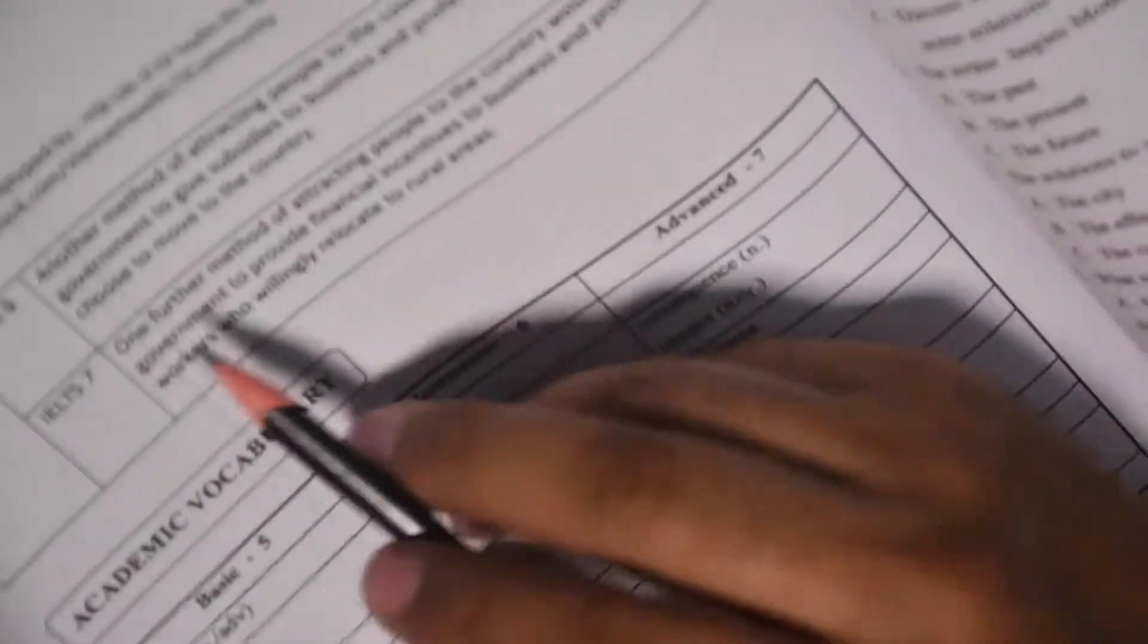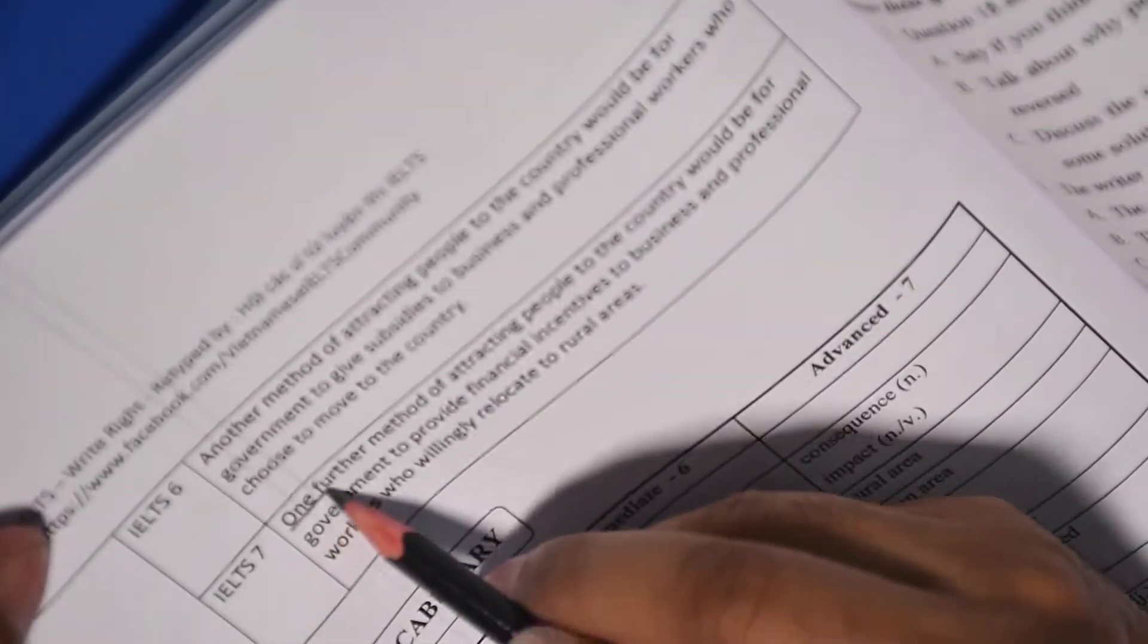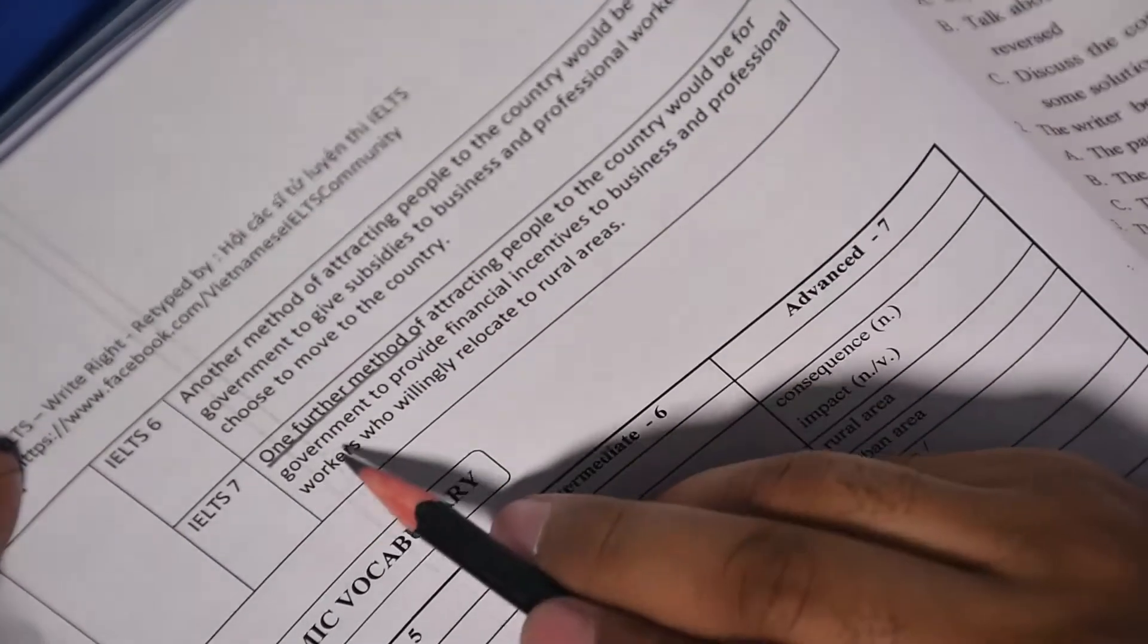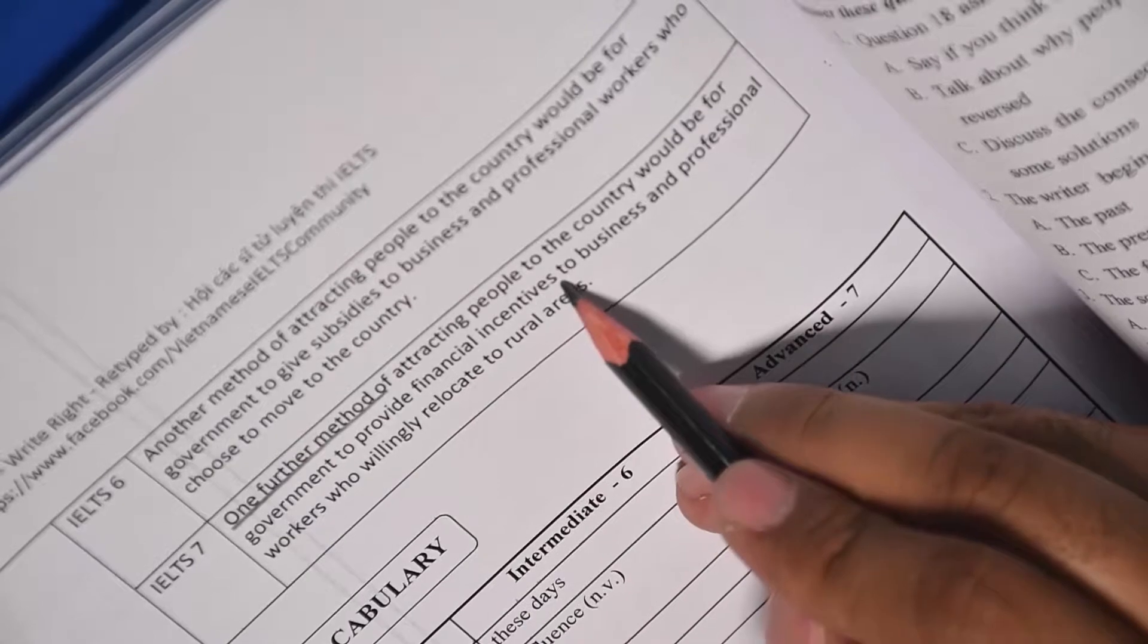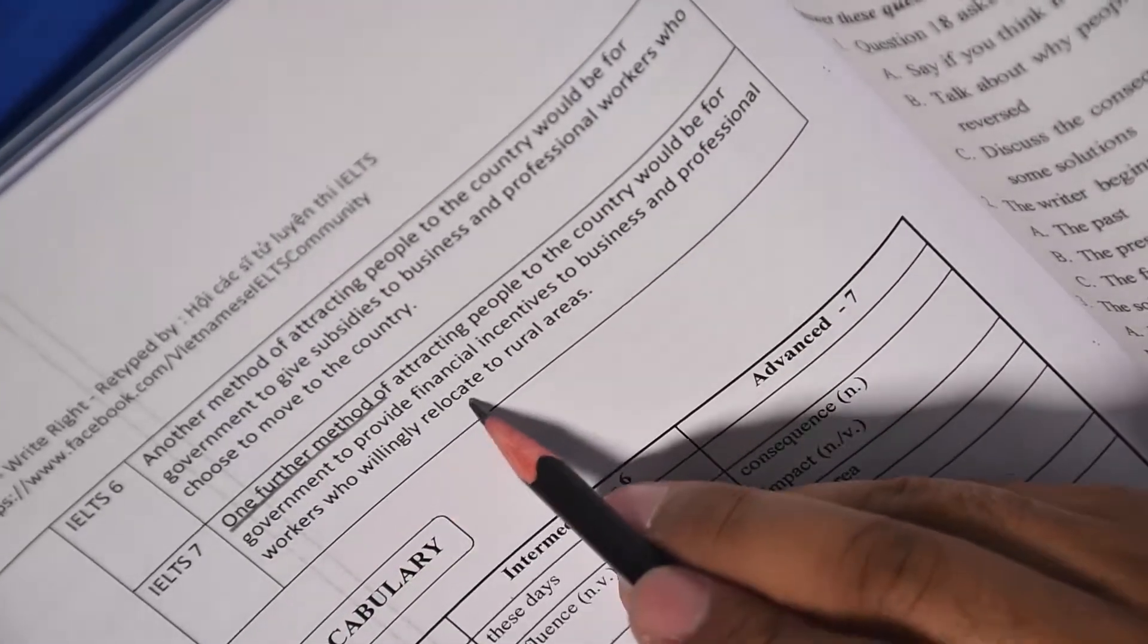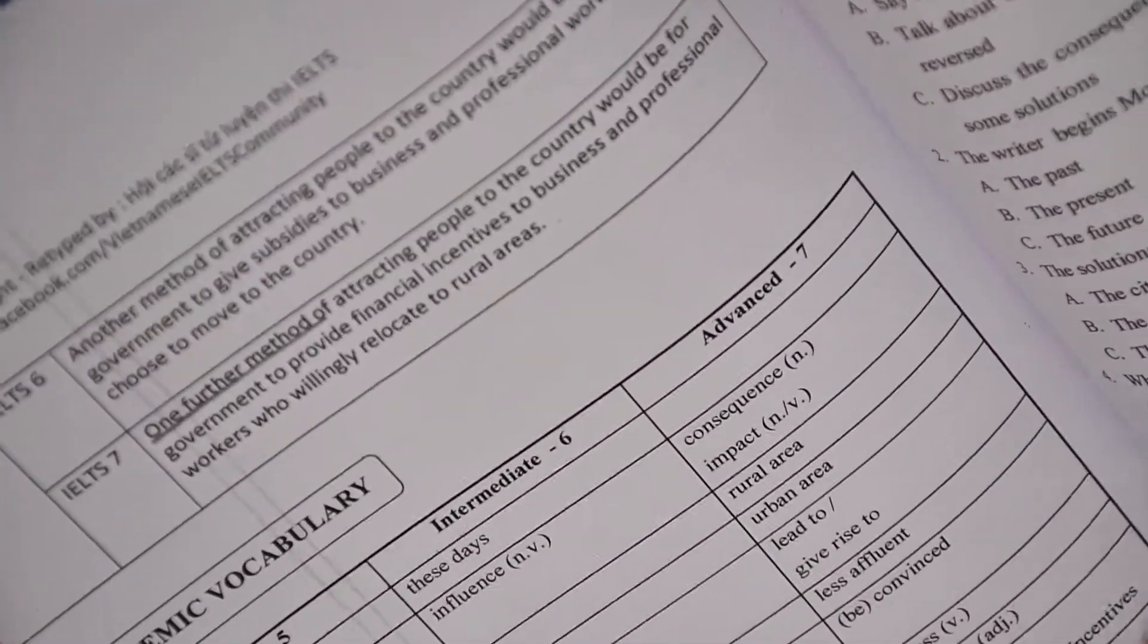One further method of attracting people to the country would be for government to provide financial incentives to business and professional workers who willingly relocate to rural areas. Now let's go through the vocabulary.